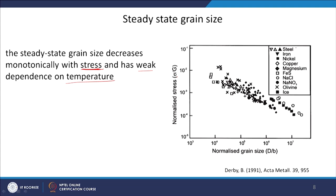The materials plotted on this graph include steel, iron, nickel, copper, magnesium, sodium chloride, ferrous sulphate, iron sulphide, NaNO₃, olivine, and ice. You can also understand that this kind of deformation, recrystallization, and microstructural changes take place in ice and olivine — a mineral — as well as many different types of materials showing the same deformation behaviour. As the normalized stress decreases, the grain size increases — stress decreasing corresponds to grain size increasing.